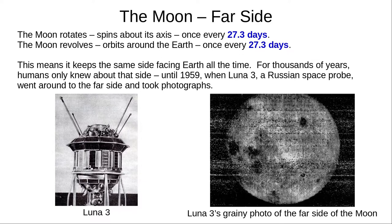So far, we've only seen pictures of one side of the Moon. That's because it keeps the same side facing towards Earth. The Moon rotates once every 27.3 days, and revolves, or orbits, around Earth every 27.3 days. These times are the same, so it keeps the same side towards us. Nobody knew what the other side of the Moon looked like, until the Russians sent Luna 3 around the Moon to take photographs in 1959.